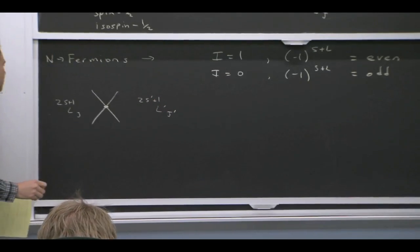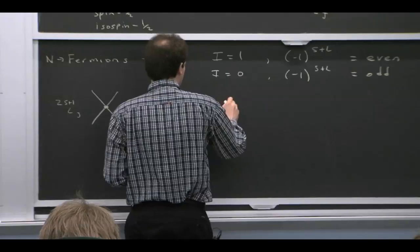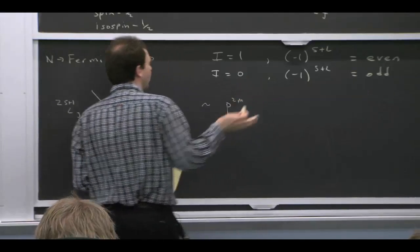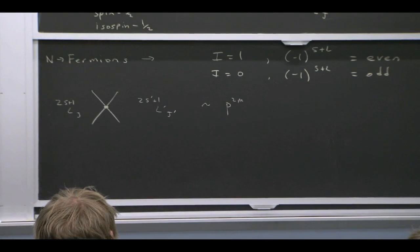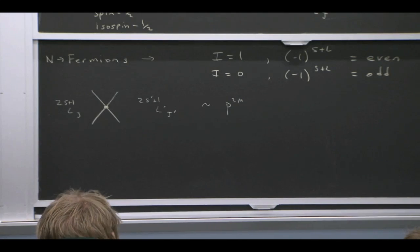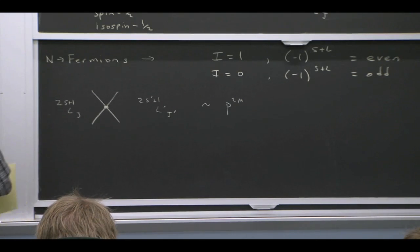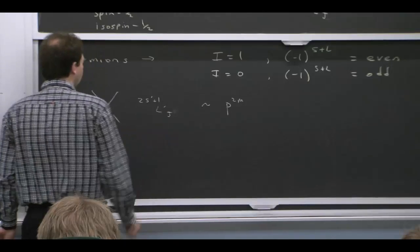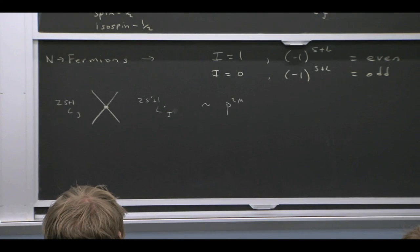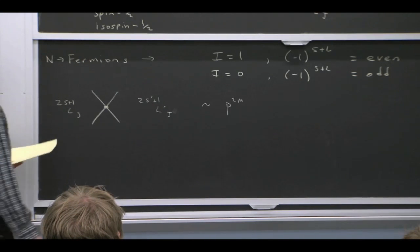And basically, what this theory has is for some given channel in and some given channel out, which I could denote in general different, we get operators that just will have some power of the center of mass momentum, P to the 2m. And actually, just by angular momentum conservation, that has to be the same as that.